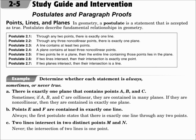Our first seven postulates are in the table there. Do not name them by their number; instead, name them by what they say. Through any two points, there is exactly one line. Through any three non-collinear points, there is exactly one plane. A line contains at least two points. A plane contains at least three non-collinear points. If two points lie in a plane, then the entire line containing those points lies in the plane. If two lines intersect, then their intersection is exactly one point. And if two planes intersect, then their intersection is a line. Those numbers simply mean the first postulate of chapter 2, the second postulate of chapter 2, and so on — name them by what they say.